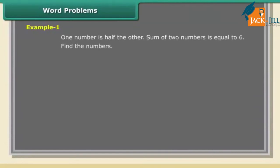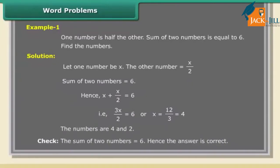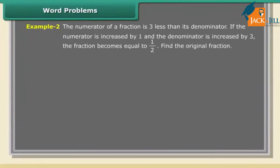Word problems. Example 1: one number is half the other. The sum of the two numbers is 6. Find the numbers. Solution: let one number be x. The other number is x/2. Sum of two numbers: x + x/2 = 6, so 3x/2 = 6, giving x = 12/3 = 4. The numbers are 4 and 2. Check: 4 + 2 = 6. Correct.